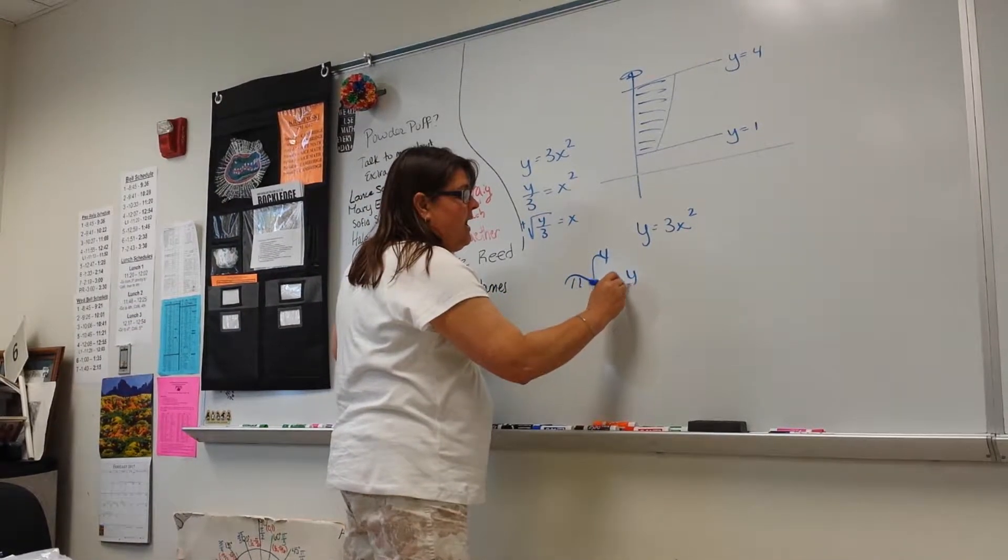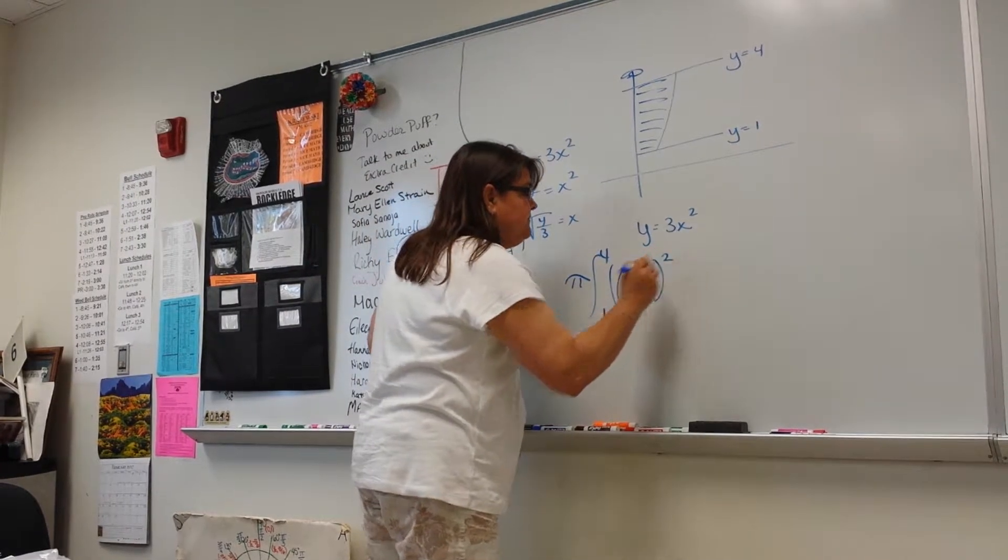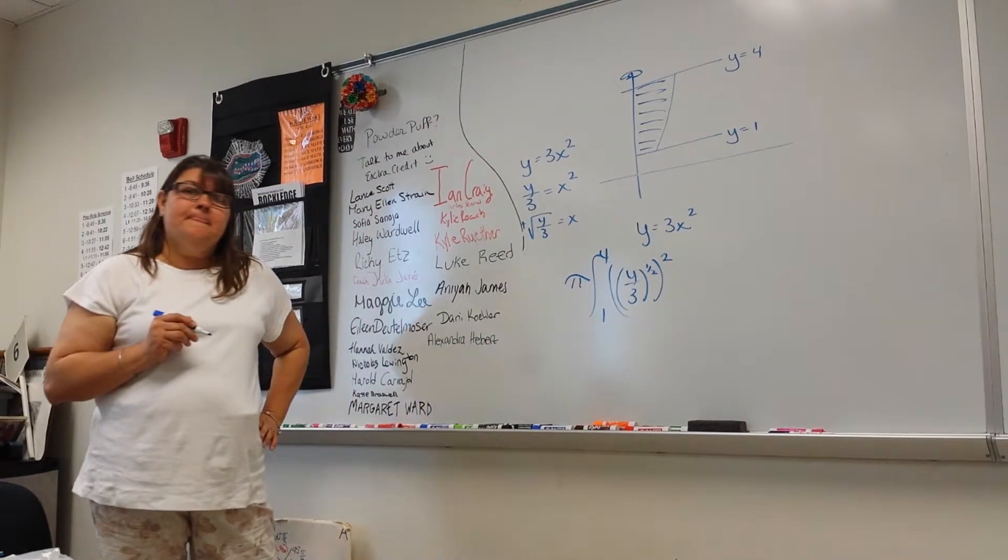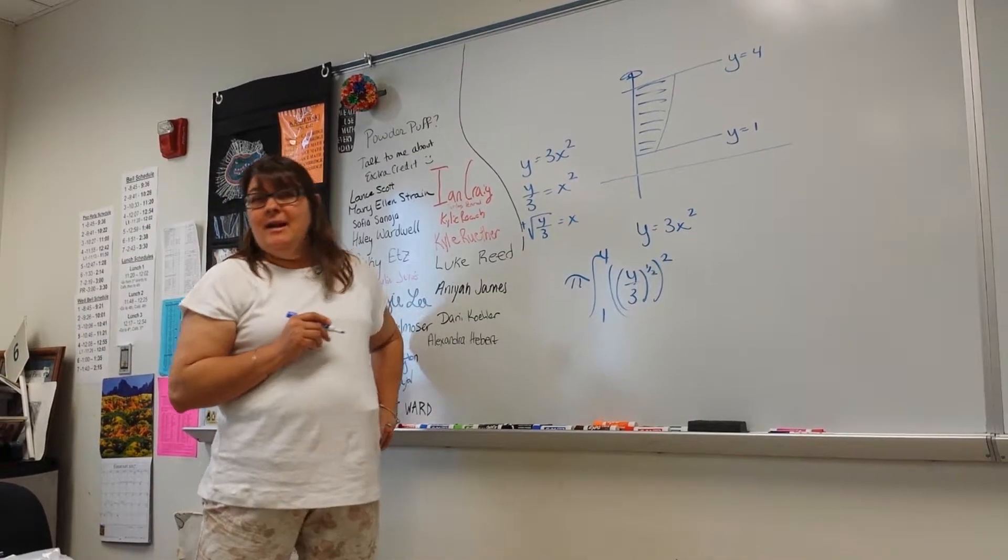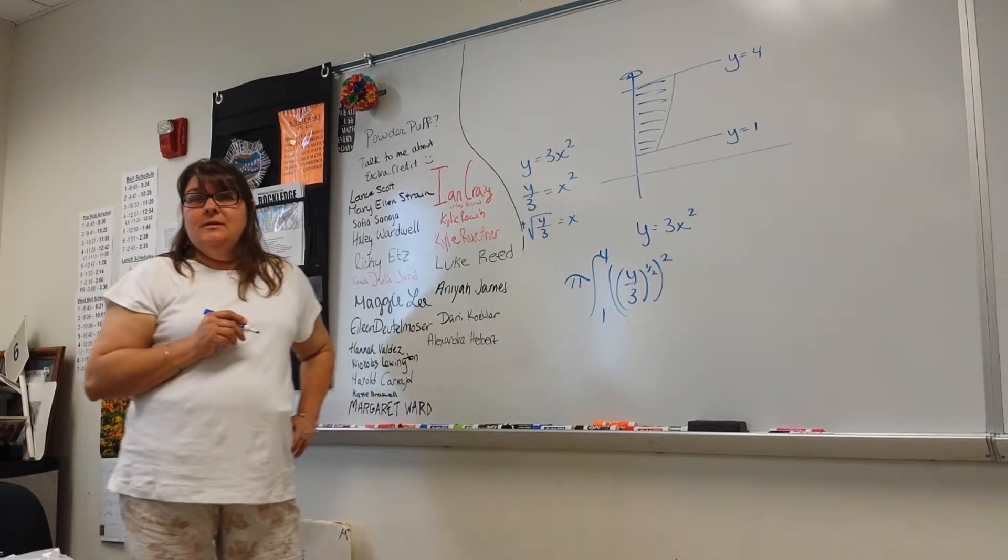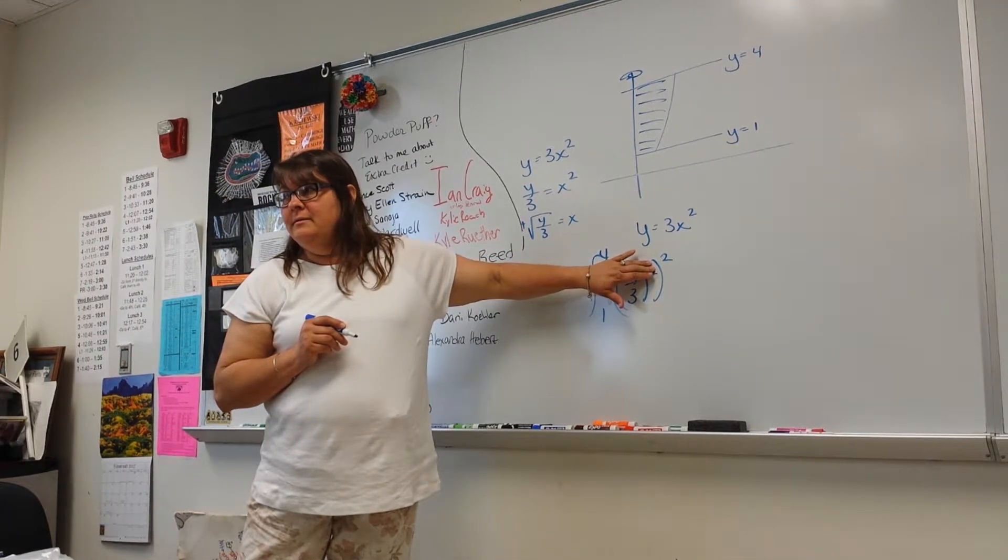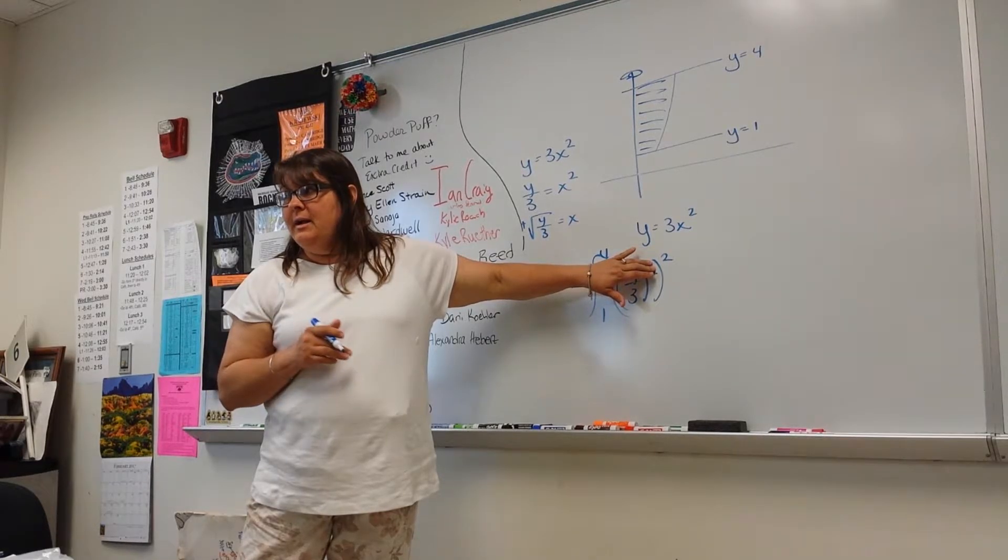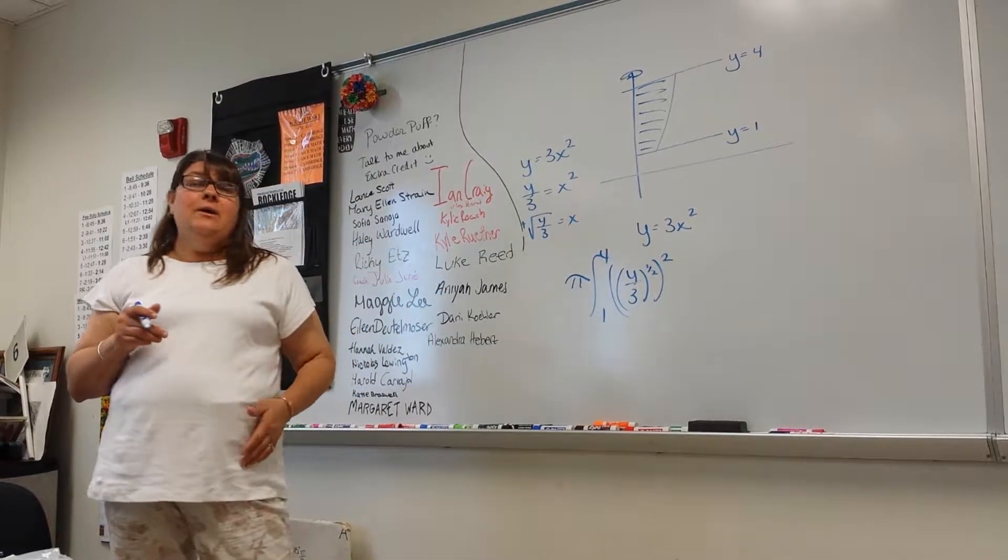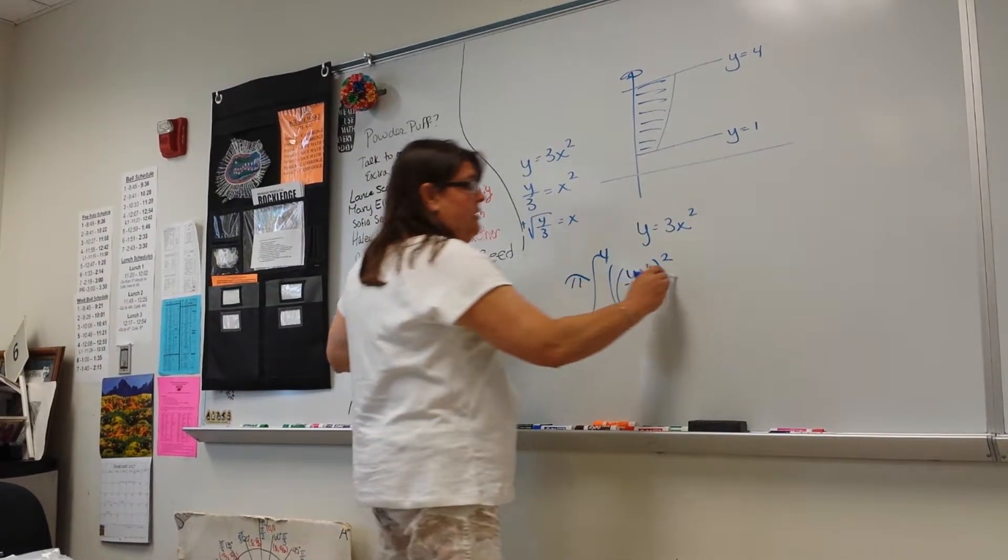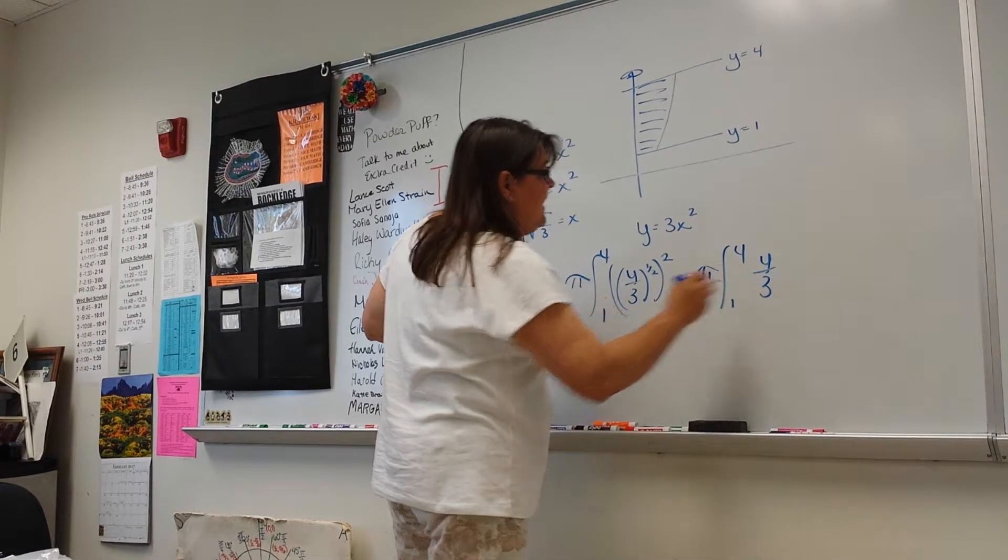So here we are. We have the Y over 3 to the 1 half. And what am I not going to forget? Square it. And it just cancels out. Which is nice. That may not happen on tomorrow's test. It may not cancel out. What would you normally do if you see a square? If there's no one out there? Multiply powers. Foil it out first. So now it just kind of cleans itself up.